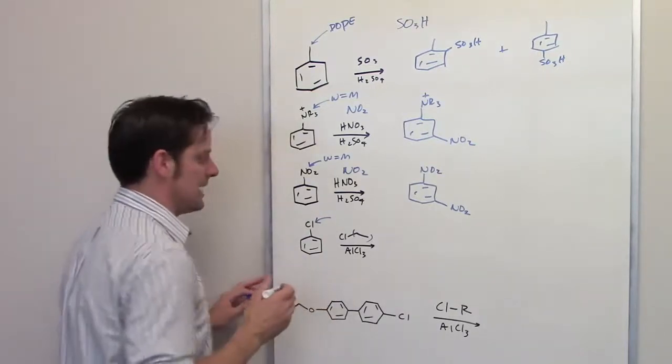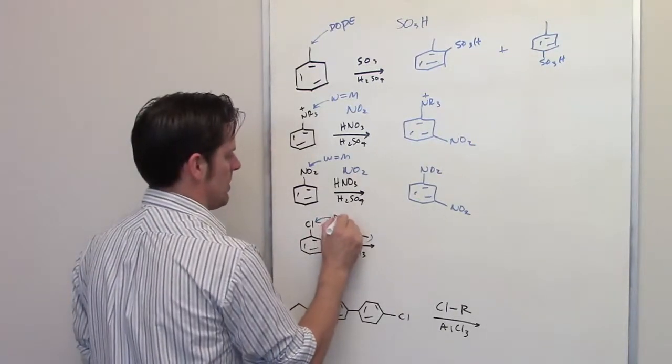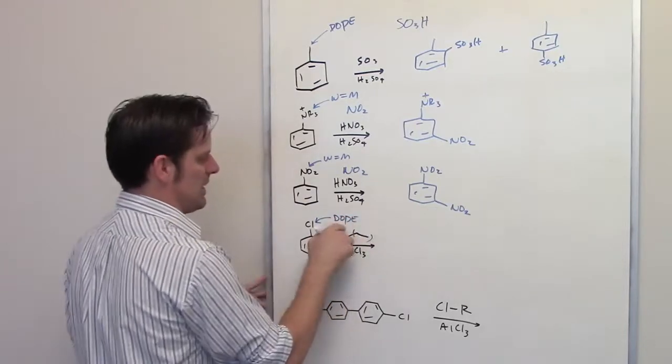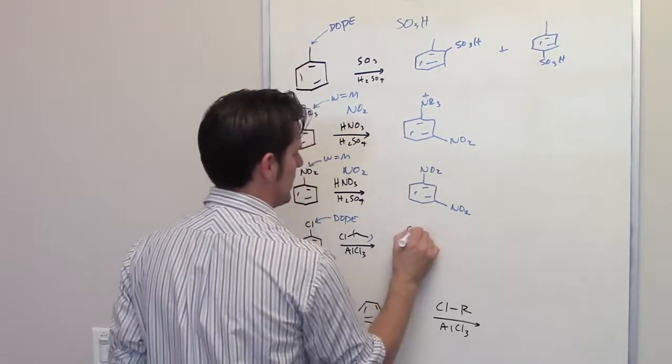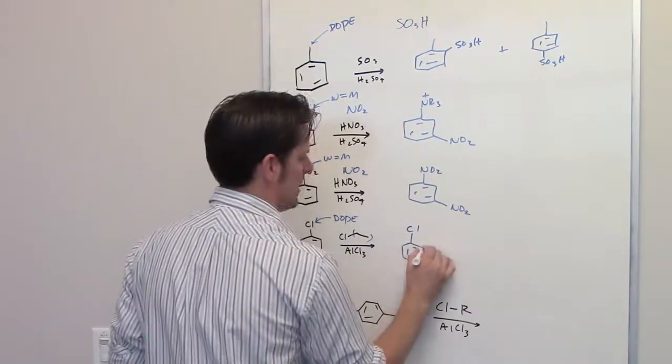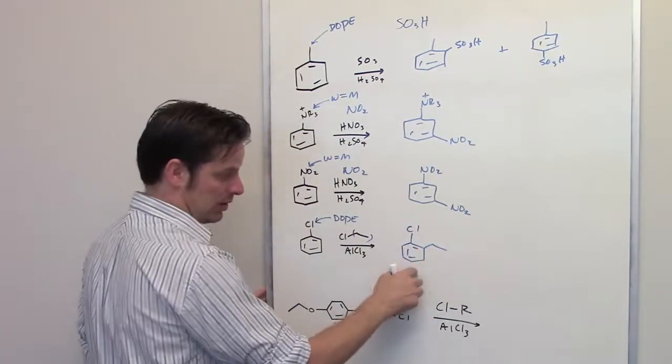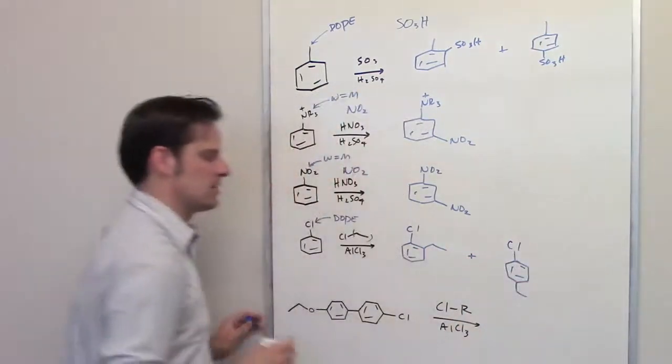Well, it's actually a weak donor. So I remember DOPE. That means donors make things go ortho-para. So I'm going to get as my product a mixture of the ethyl group at the ortho position plus the para-isomer.